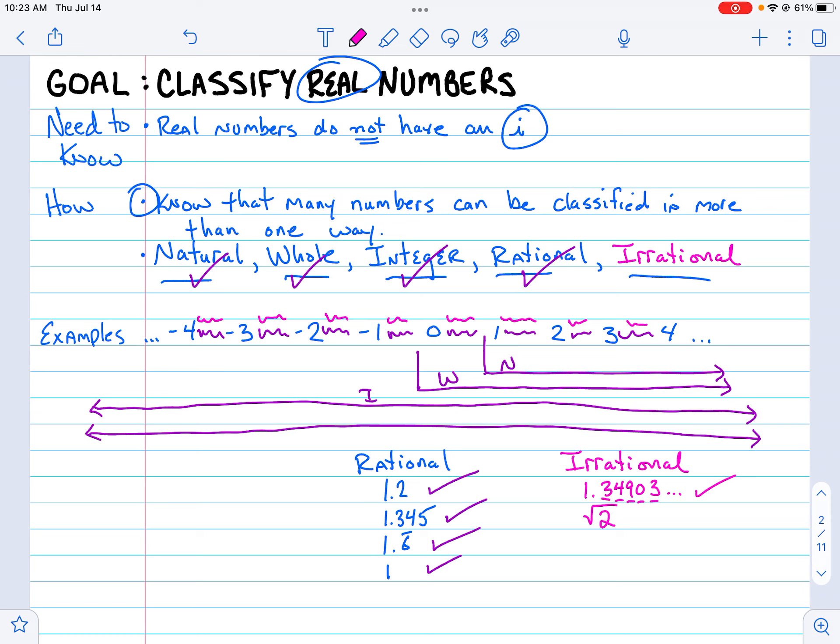Like 3.49083... there's no pattern there, and the three dots show that that no-pattern-ness—whatever word that is—continues on forever. You'll sometimes see that represented with squares and cubes that are non-perfect, so those are irrational.